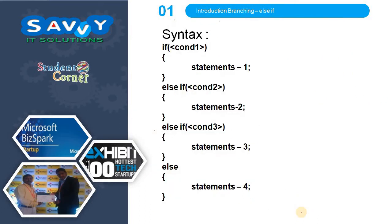The syntax of else-if ladder: if condition 1 is true, statement 1 will be executed; otherwise condition 2 is checked — if true, statement 2 is executed; again if false, condition 3 is checked — if true, statement 3 is executed. This continues, and at the end there is an else block where statement 4 is executed as the default case. This is the way we write the else-if ladder syntax.